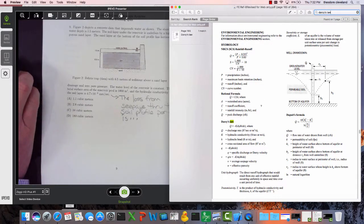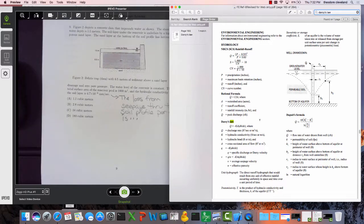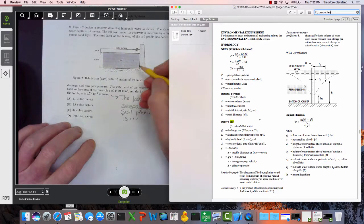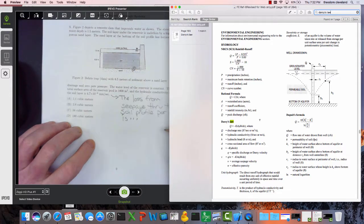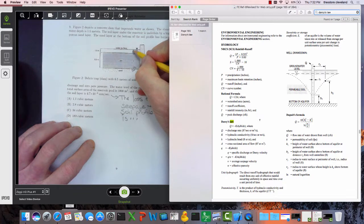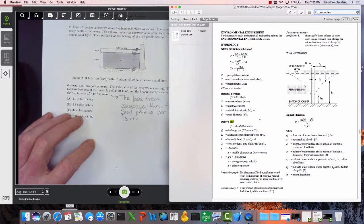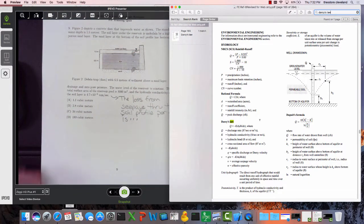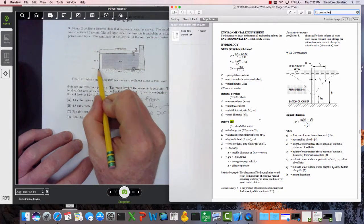Okay, there it is. So Q equals K times the area times the change in head over change in distance. We need to figure out what the hydraulic head here is and the hydraulic head there is, and then we can answer the question.